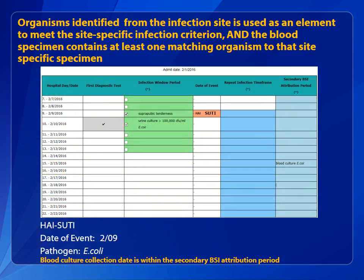In the first scenario, the organism identified from an infection site must be used as an element to meet the site-specific infection criterion, and the blood specimen must contain at least one matching organism to the site specimen. In this example, E. coli is found in the urine, and the symptomatic urinary tract infection, or SUTI 1, infection criterion is met. Within the SUTI secondary BSI attribution period, the same organism found in the urine culture is also found in the blood culture. Therefore, the BSI is secondary to the SUTI.